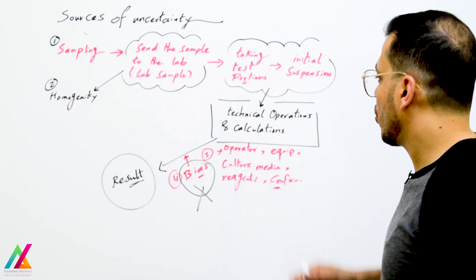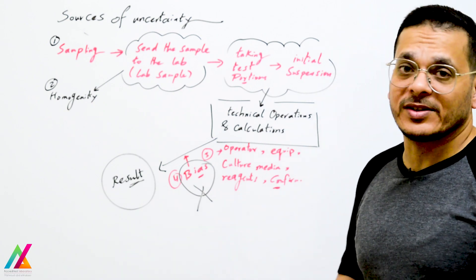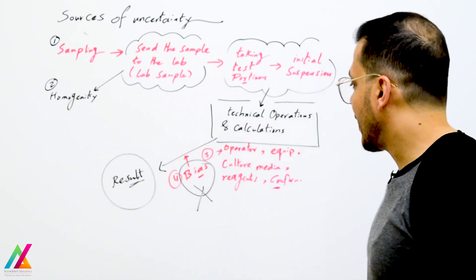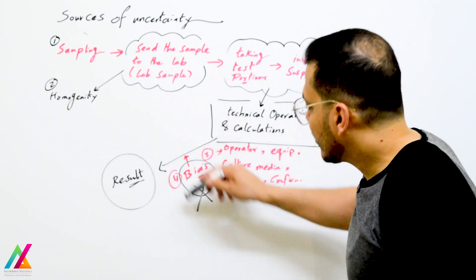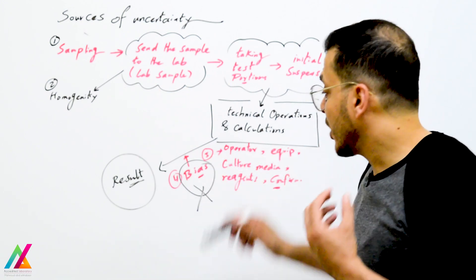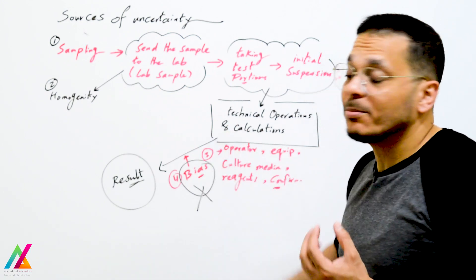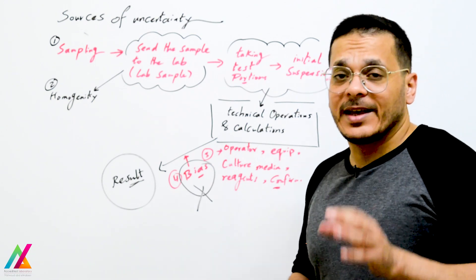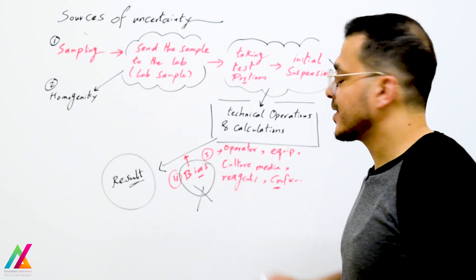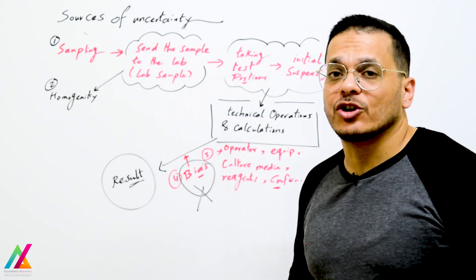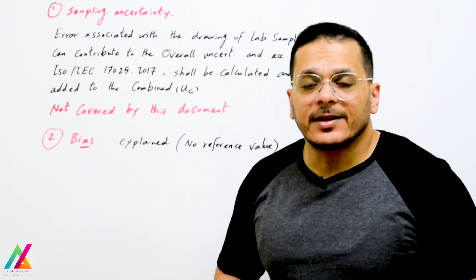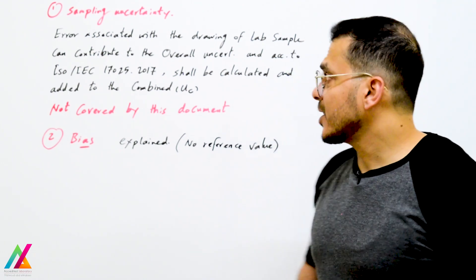All of these can be sources of uncertainty, and then to obtain the result of the sample there is bias. Bias can also have an effect, but as explained before, it cannot be included in this estimation for measurement uncertainty. Let's take each source individually.